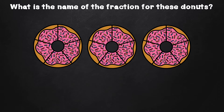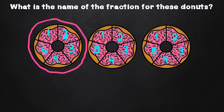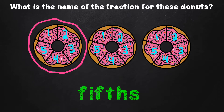What is the name of the fraction for these doughnuts? To name the fraction, we need to first see how many parts each doughnut has been partitioned or divided into: one, two, three, four, five. Each doughnut is cut or partitioned into five slices each. When naming a fraction beyond or more than a whole, we look at one doughnut or object to name the fraction. Because each doughnut is partitioned into fifths, we can name the fraction for these doughnuts as fifths.